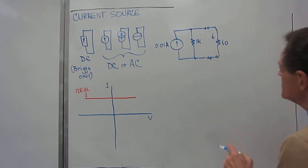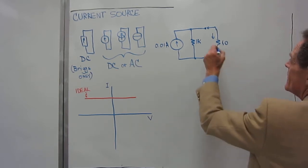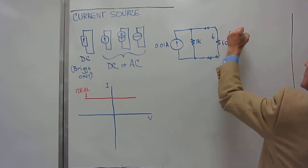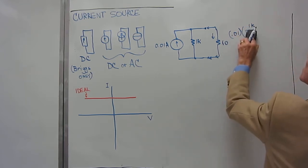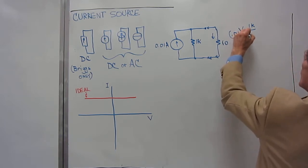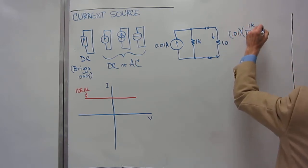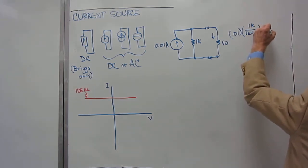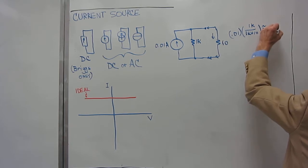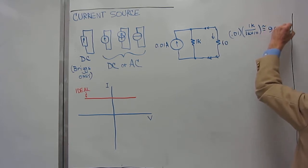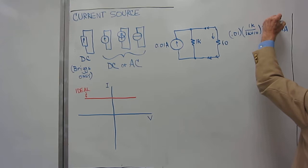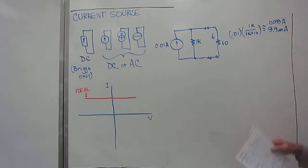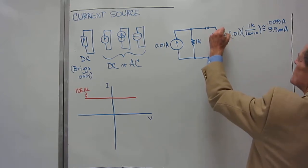So, this is now 10 ohms. So, the current through the 10 ohm resistor will be, by the current divider rule, it will be 0.01 times 1K over 1K plus 10, which is approximately 9.9 milliamps, or another way of writing that would be 0.0099 amps. So, that would be the current through the 10 ohm resistor, I10.